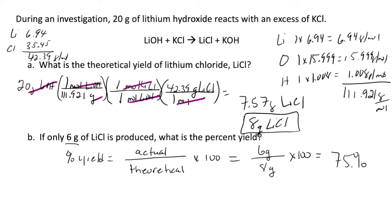What this is saying is that 75% of what we would have expected to produce under perfect conditions was actually produced in the lab. As always, thank you for watching.